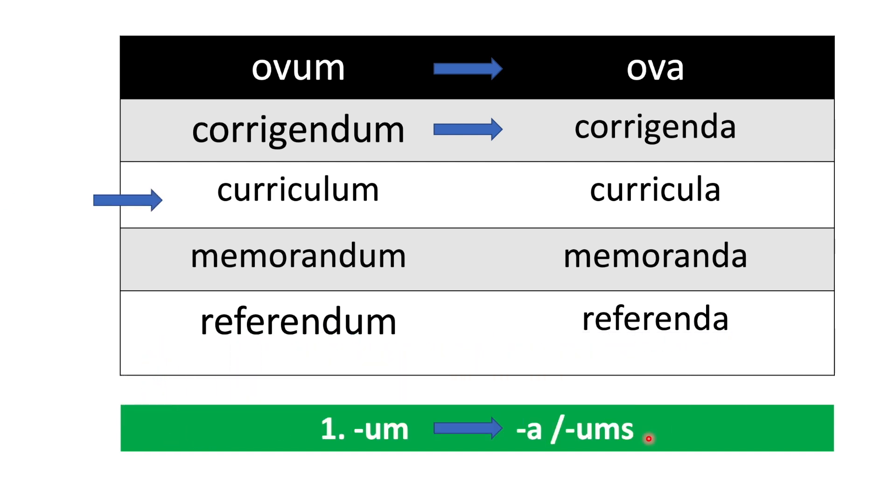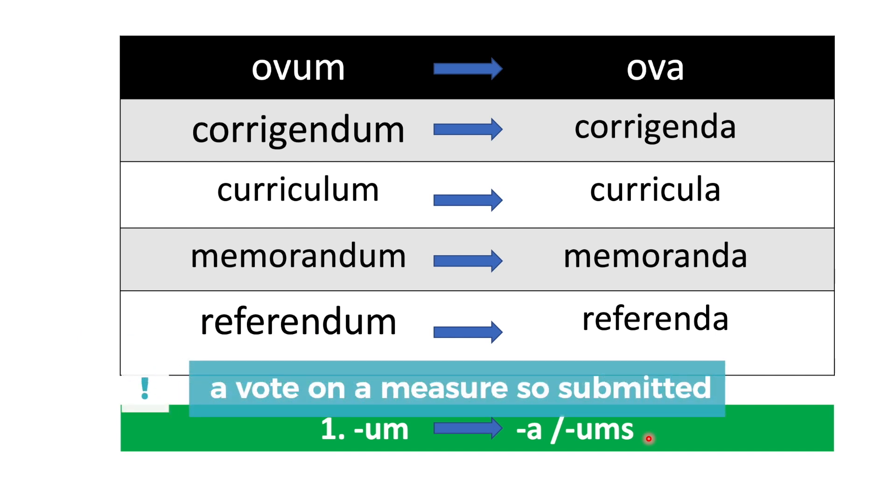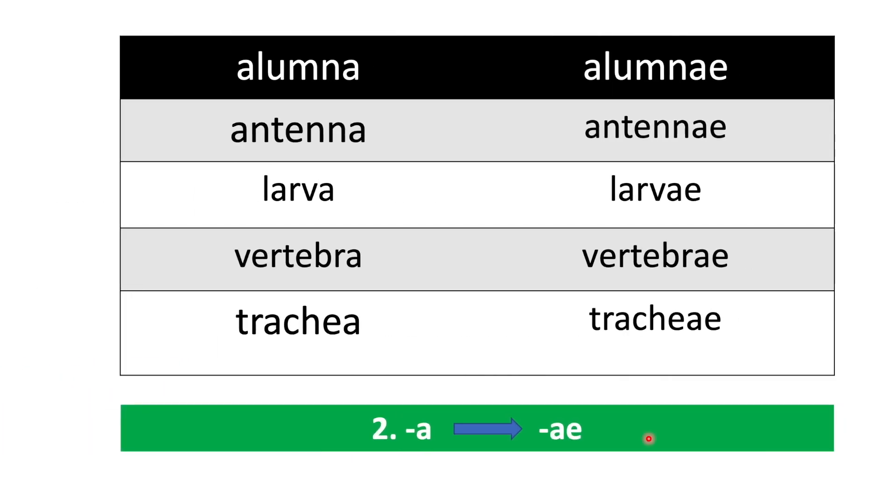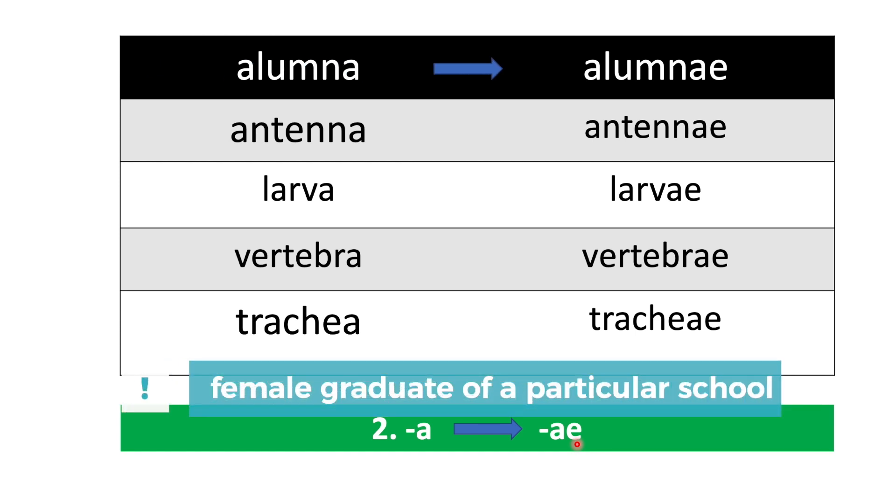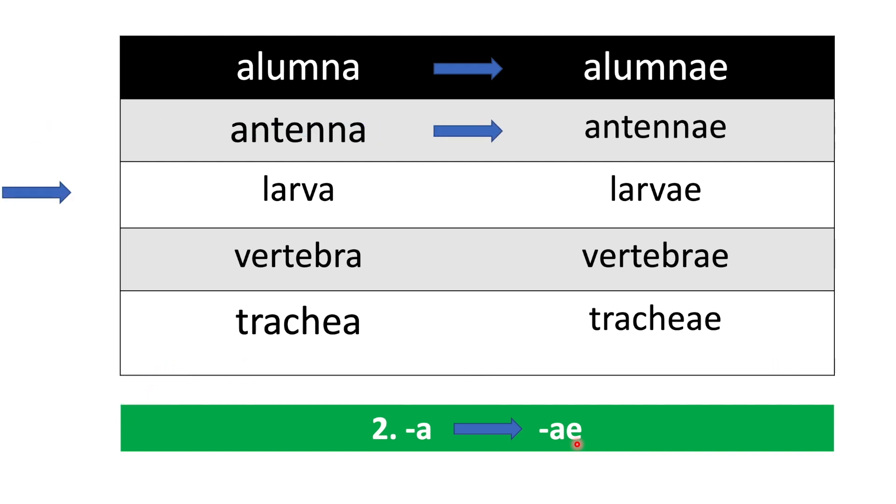Curriculum/curricula, memorandum/memoranda, referendum/referenda. Referendum is a vote on a measure so submitted. Second category: words ending with a, and then for the plural adds ae. Alumna/alumnae—alumna refers to a female graduate of a particular school. Antenna/antennae, larva/larvae, vertebra/vertebrae, trachea/tracheae.